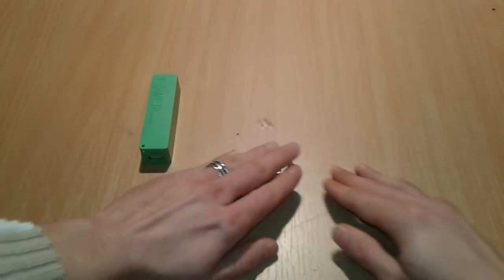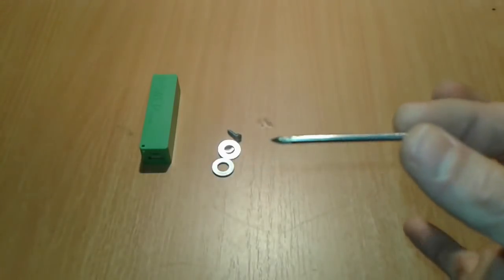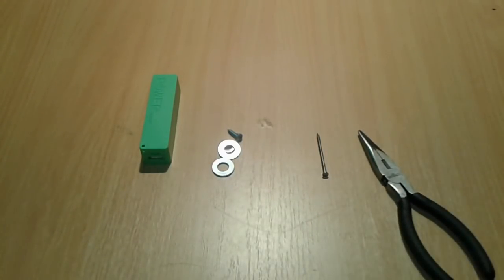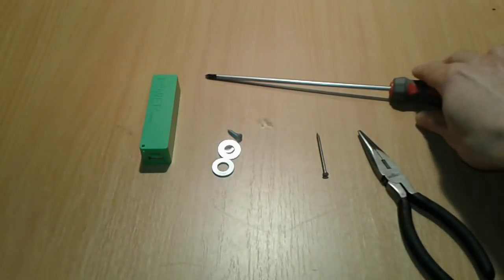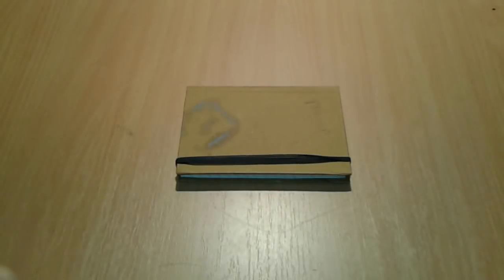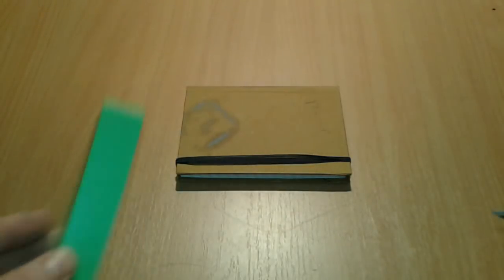We're going to need a nail, some pliers, a screwdriver, and some wires. And we're going to need an oven to be able to make some holes in our case.